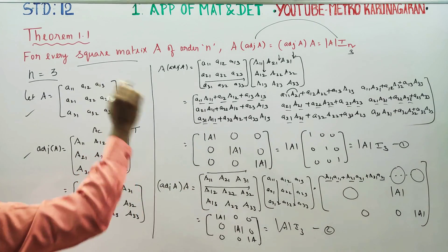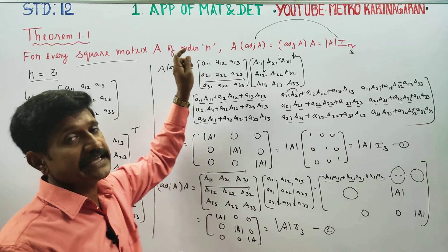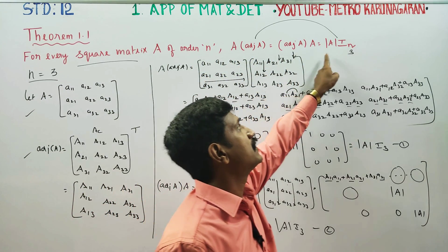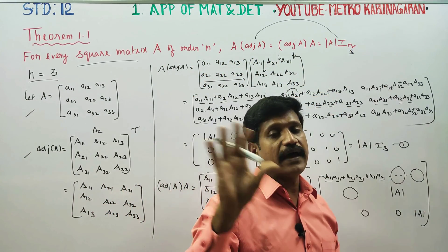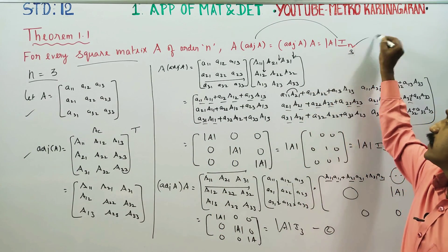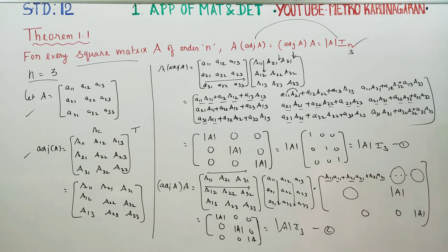From cases 1 and 2, you can write in general: A into adjoint A equals adjoint A into A equals determinant A into In. You can close the proof. Thank you.